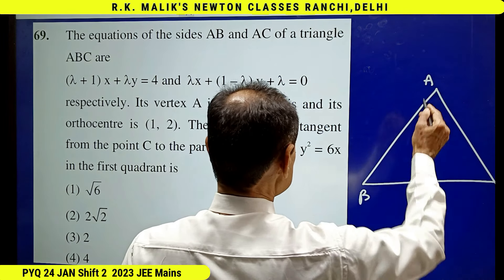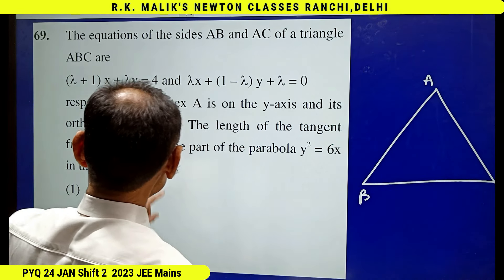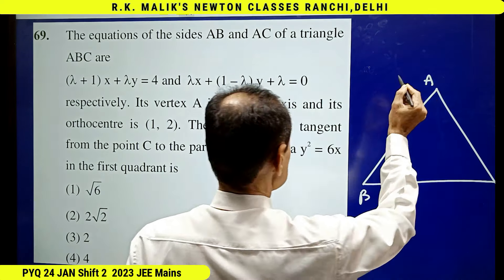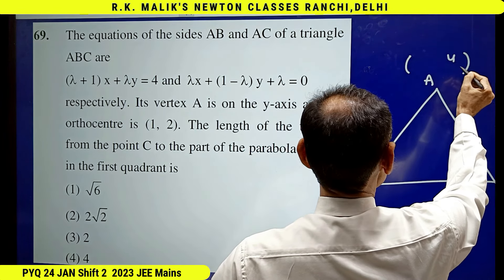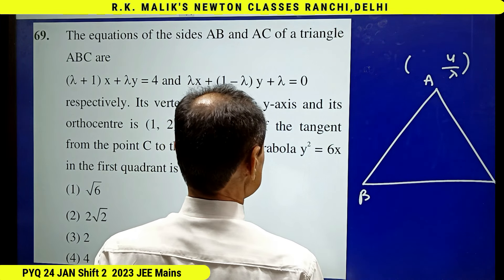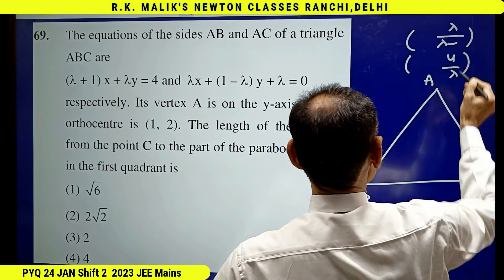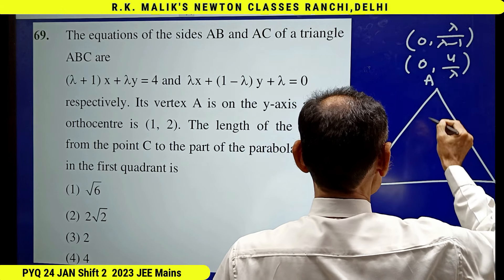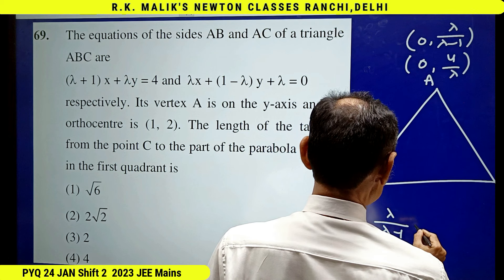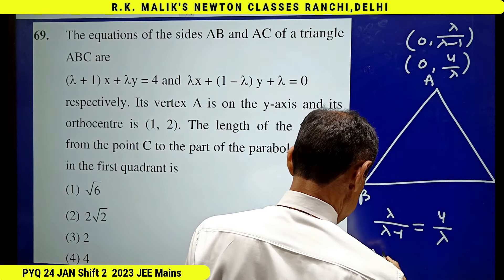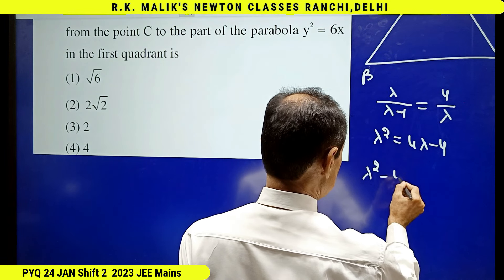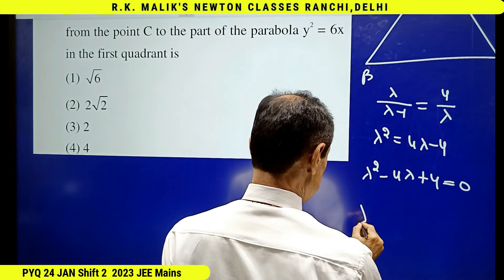To find point A, we find where each line cuts the y-axis by putting x equal to 0. For the first line, the y-coordinate is 4 upon lambda. For the second line, the y-coordinate is lambda upon (lambda minus 1). Equating these two values gives lambda upon (lambda minus 1) equals 4 upon lambda, that is lambda squared equals 4 lambda minus 4, giving lambda squared minus 4 lambda plus 4 equals 0, so lambda equals 2.